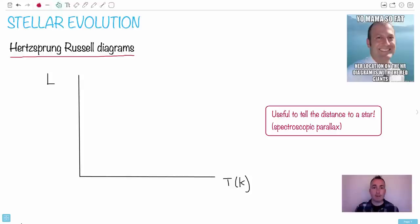Let's talk about the evolution of stars. Sorry for the your mama so fat jokes, there's actually two of them in this set. Your mama so fat, her location on the HR diagram is with the red giants. That's really nerdy and of course nothing against anybody's mother. Those are just dumb jokes. So let's look at this HR diagram as it's called. This is the Hertzsprung-Russell diagram.